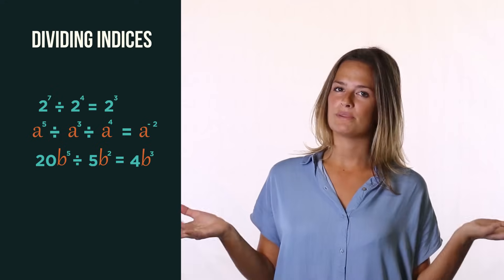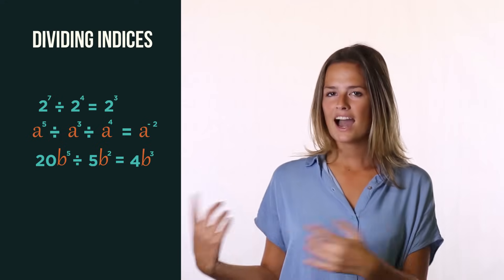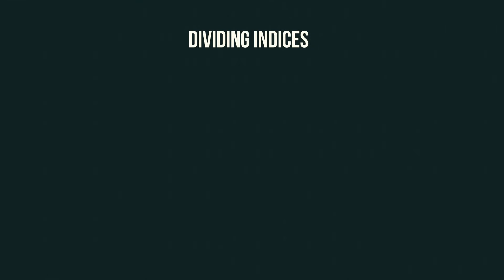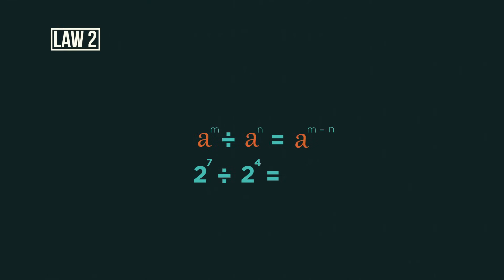So what happens when we divide with indices? Have a look and see if you can work it out. When we divide indices, we subtract the powers. But again, the base must be the same.